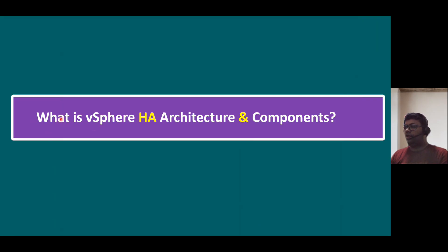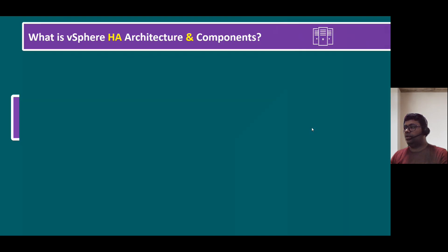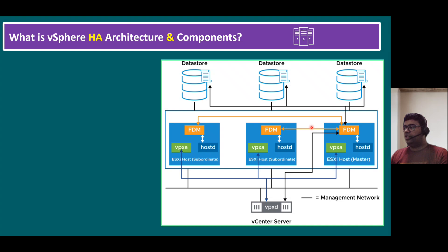What is vSphere HA architecture and components? Within our vSphere HA architecture, we require minimally three ESXi hosts. To manage multiple ESXi hosts, we require a vCenter Server, and to store all virtual machines we require shared storage — you can create multiple shared storages depending on customer requirements. Now, regarding agent services: within each ESXi host, the default host agent service is hostd (host daemon).